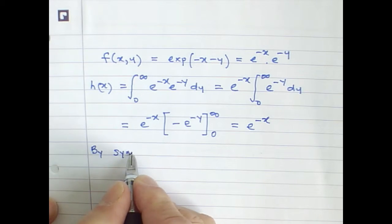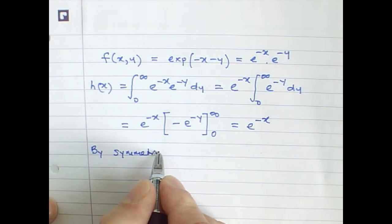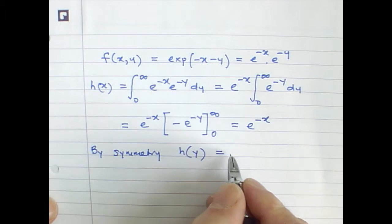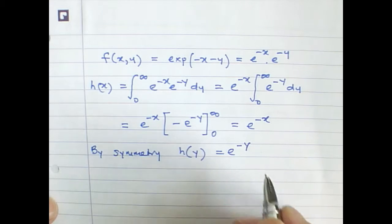And of course by symmetry it follows that the marginal distribution for y can be derived as e^(-y).